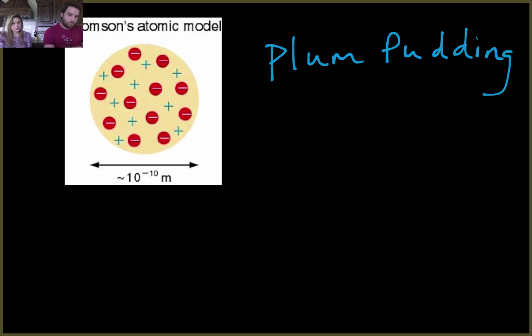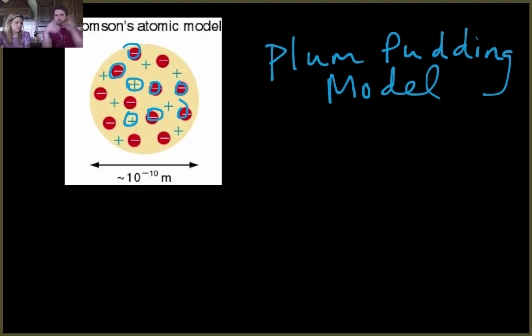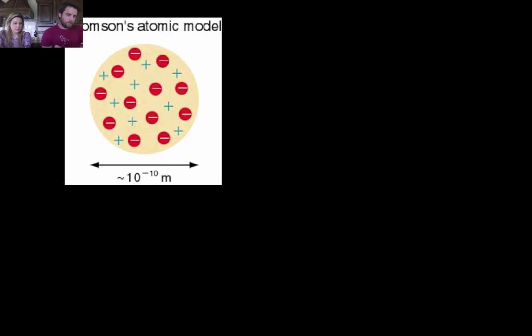If you've ever seen plum pudding, it's an older dessert - just pudding with raisins and plums on top. He thought that the protons and electrons were just stuck in the top. The atom was just a circle, they were all mixing together. One big dense body, which you'll find out is not really the case.